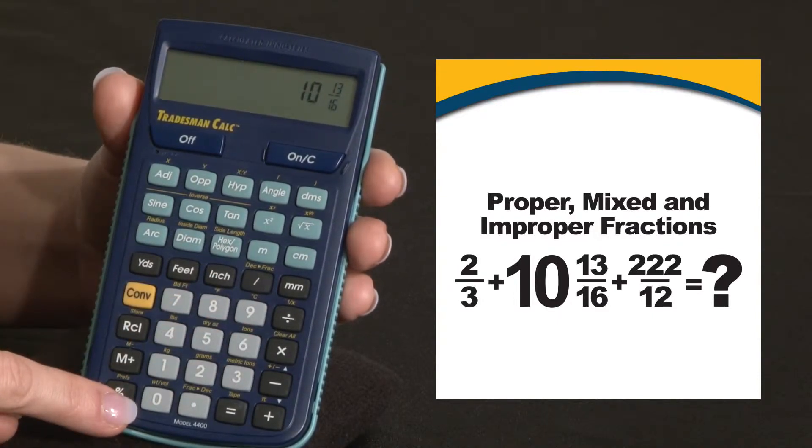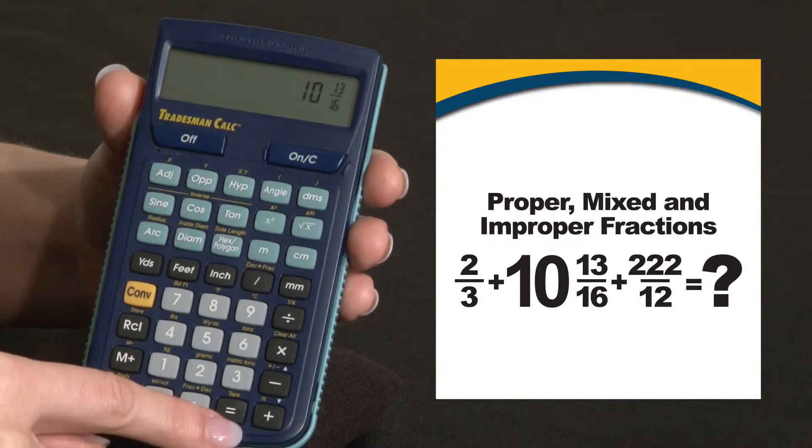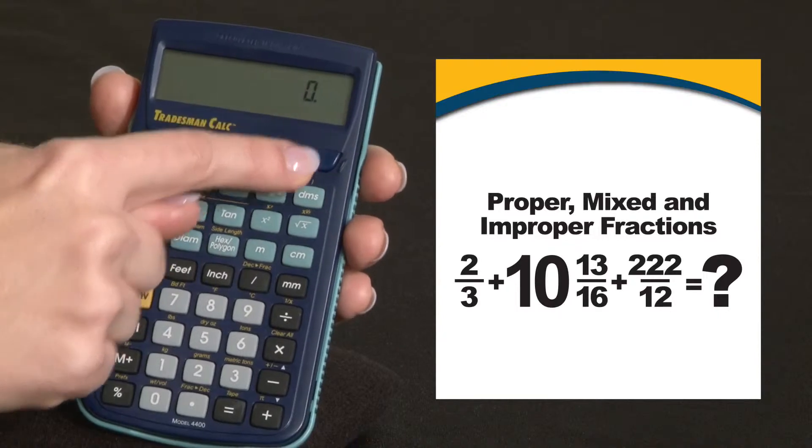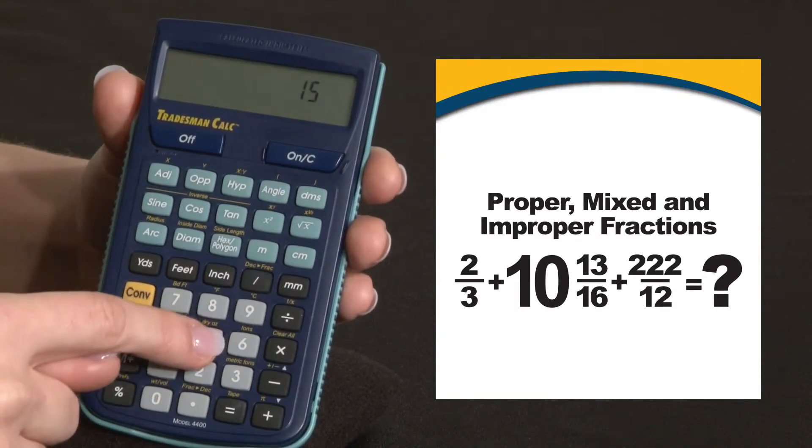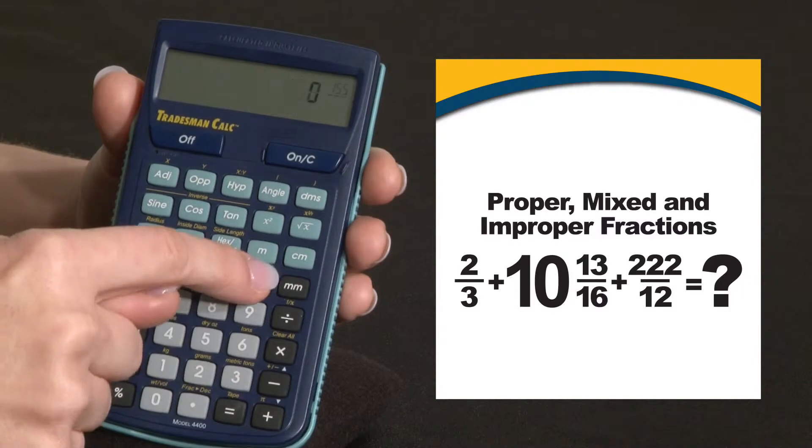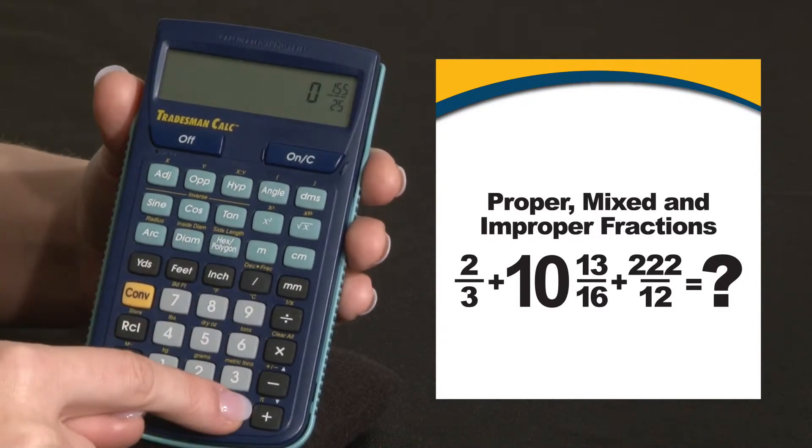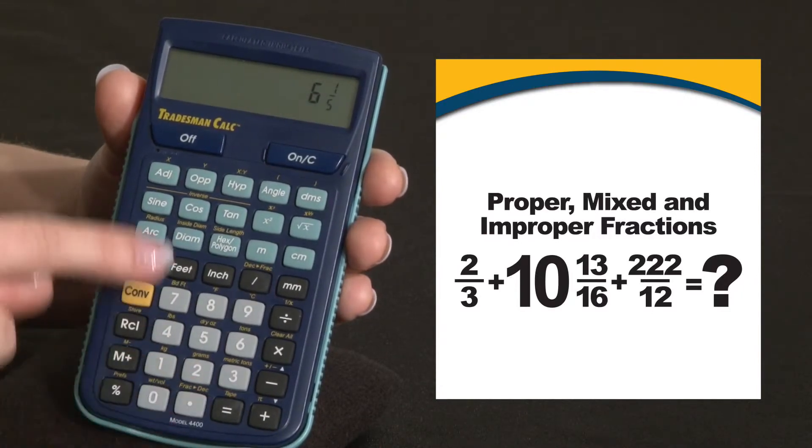To convert an improper fraction to a mixed number, just press the equals key. For example, if we enter 155 over 25 equals, we see the reduced answer.